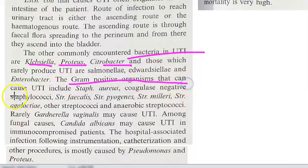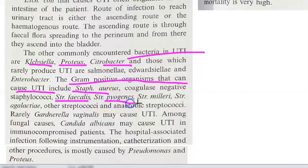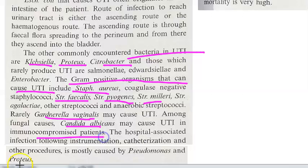Gram-positive organisms that can cause UTI include Staphylococcus aureus, Streptococcus faecalis, and Streptococcus pyogenes. Gardnerella vaginalis may also cause UTI. Candida albicans — a fungus — may cause UTI, usually in immunocompromised patients. However, this video is about E. coli.